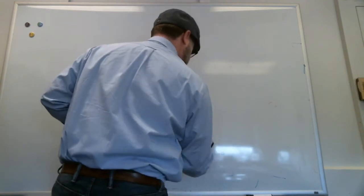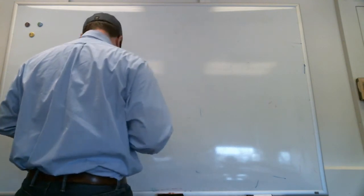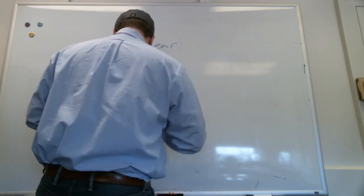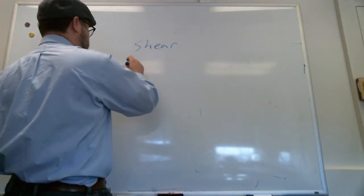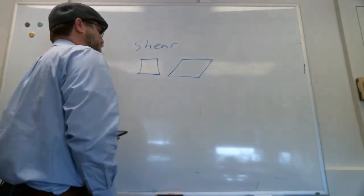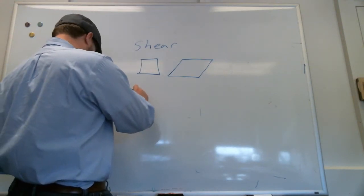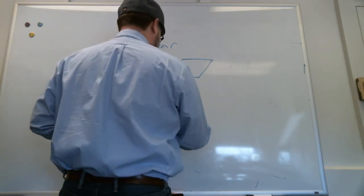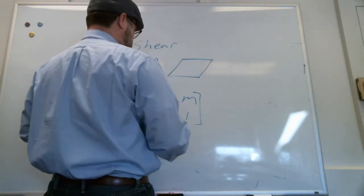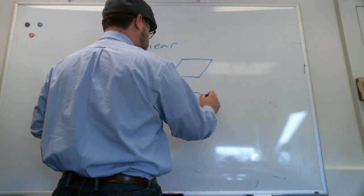All right. Other important ones that are going to be useful to understand in this class is a shearing transformation. All right, we take our cube and shear it. All right. So if we take a look at this and if we consider a vector along the x-axis, what happens to it?